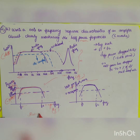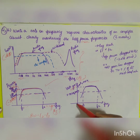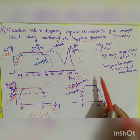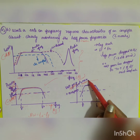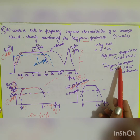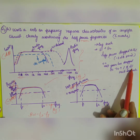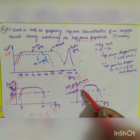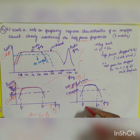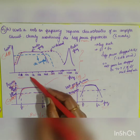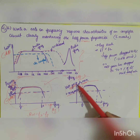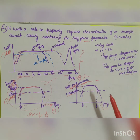So half P_max gives your cutoff frequency, and bandwidth is equal to f2 minus f1. Similarly, when you plot the graph between frequency and voltage gain, the mid band voltage gain is AV_max. At the half power frequency, the voltage gain drops to 70.7% of the mid band value, given by 0.707 × AV_max, with f2 as upper and f1 as lower cutoff frequency. These are the two separate diagrams for frequency response with respect to power output and voltage gain output.